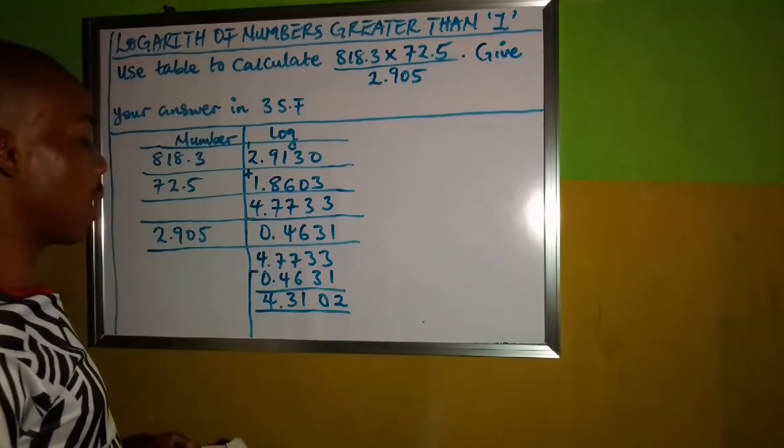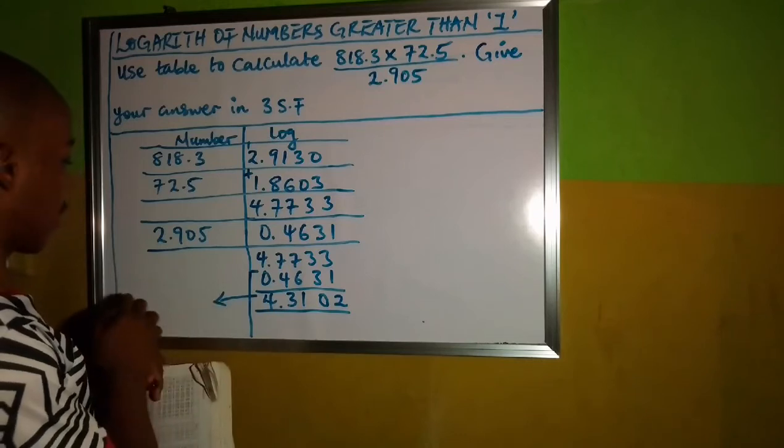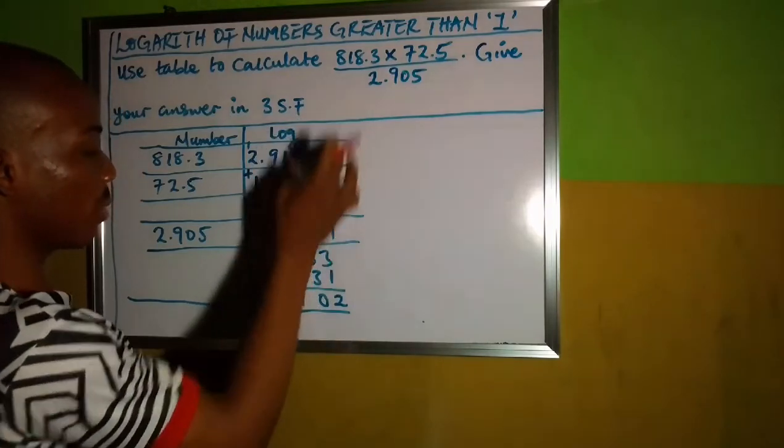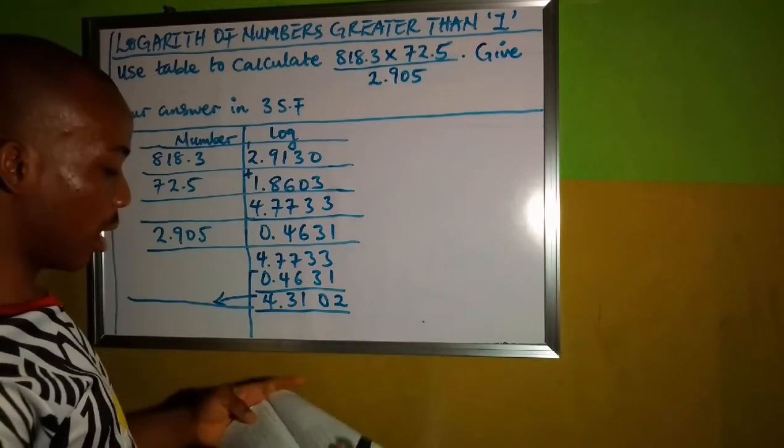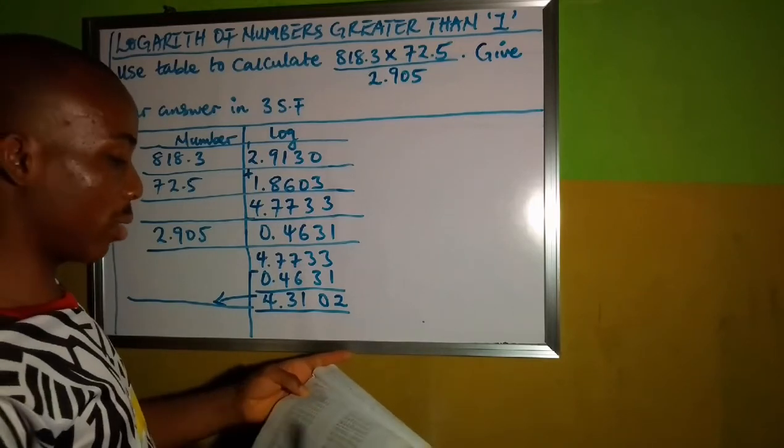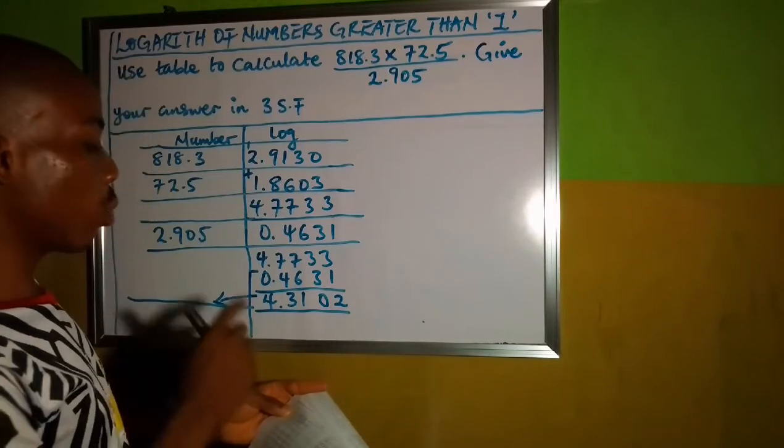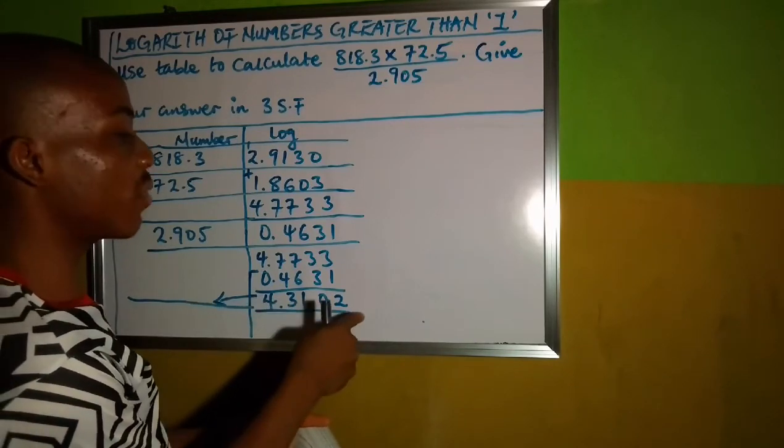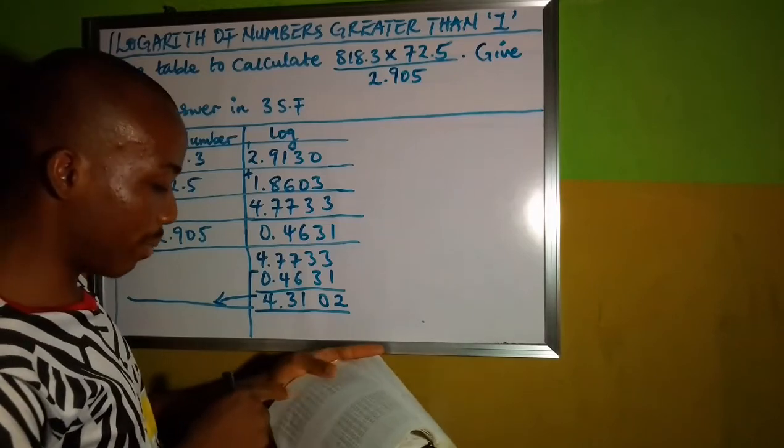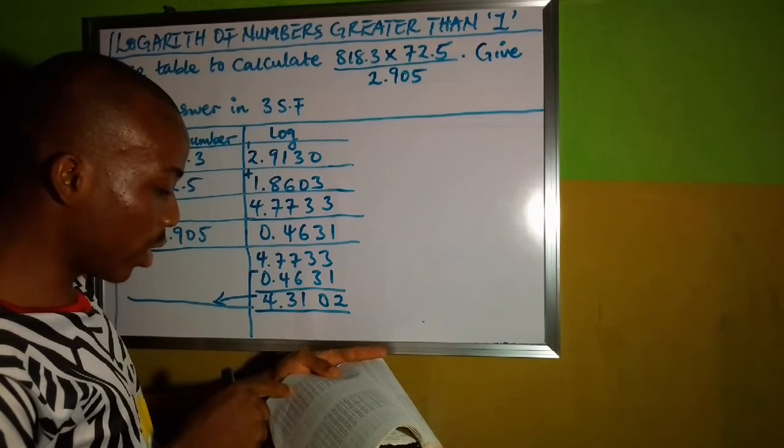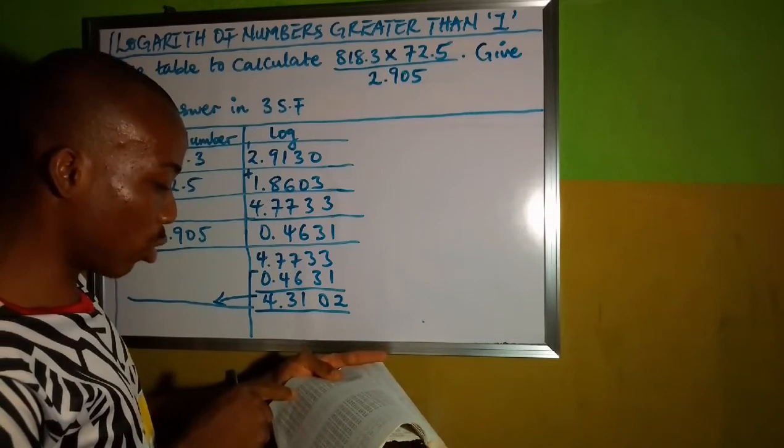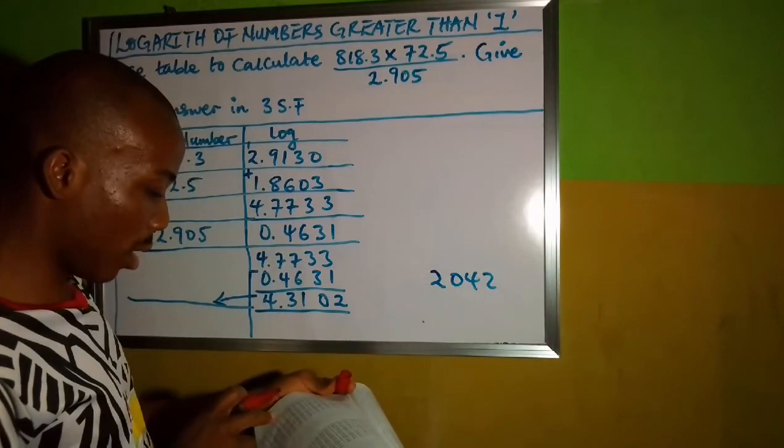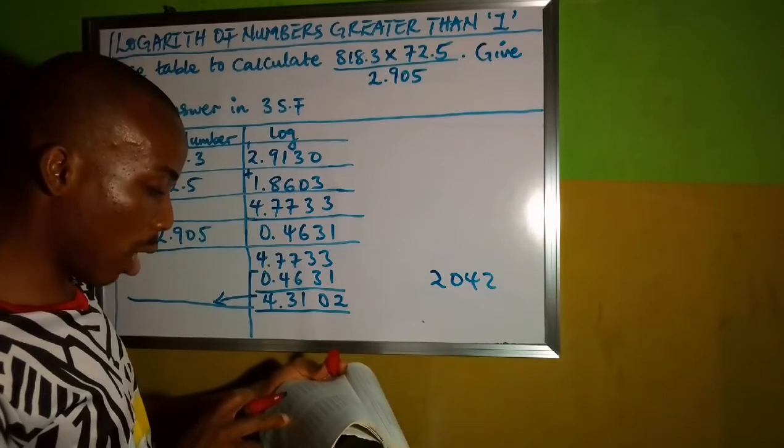Now, we are not done yet. The last thing we are going to do from here now is that we are going to get the antilogarithm of this, our solution to this problem in log. So let's get the antilogarithm. Go to the back of your test loop, you will see antilogarithm of numbers. We can skip this whole number. So what we check is 0.31 under 0 and difference of 2. In the antilogarithm table, 0.31 under 0 is 2042.